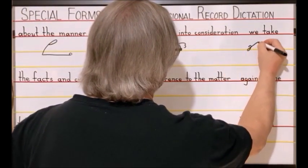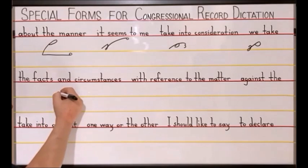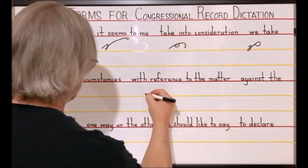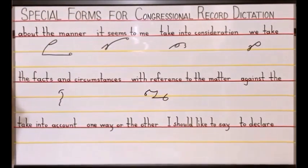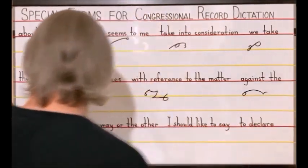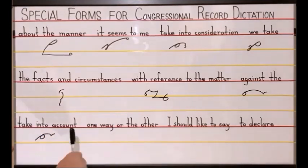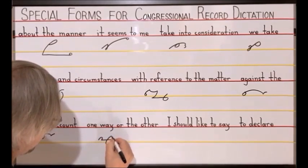The facts and circumstances, T-H, disjoined F-S-S, with reference to the matter, E-T-H-R-F-M-A-T, against the, A-G-T-H, take into account, T-A-K-T, one way or the other, U-N-A-U-T-H.